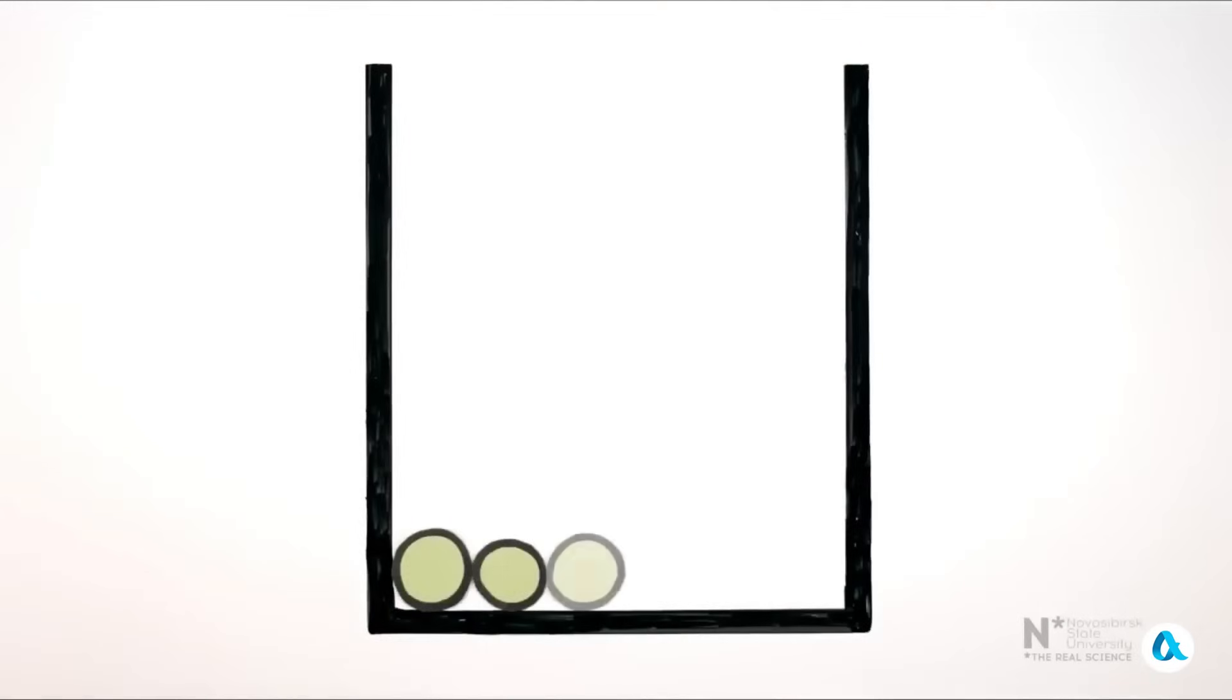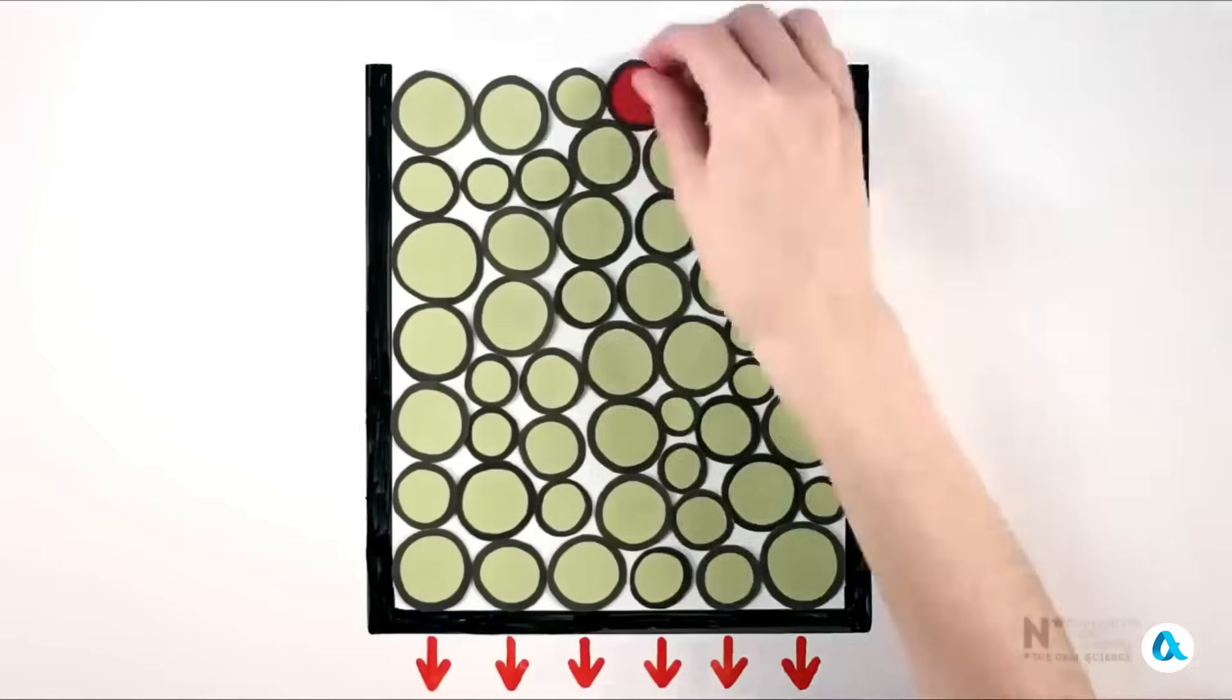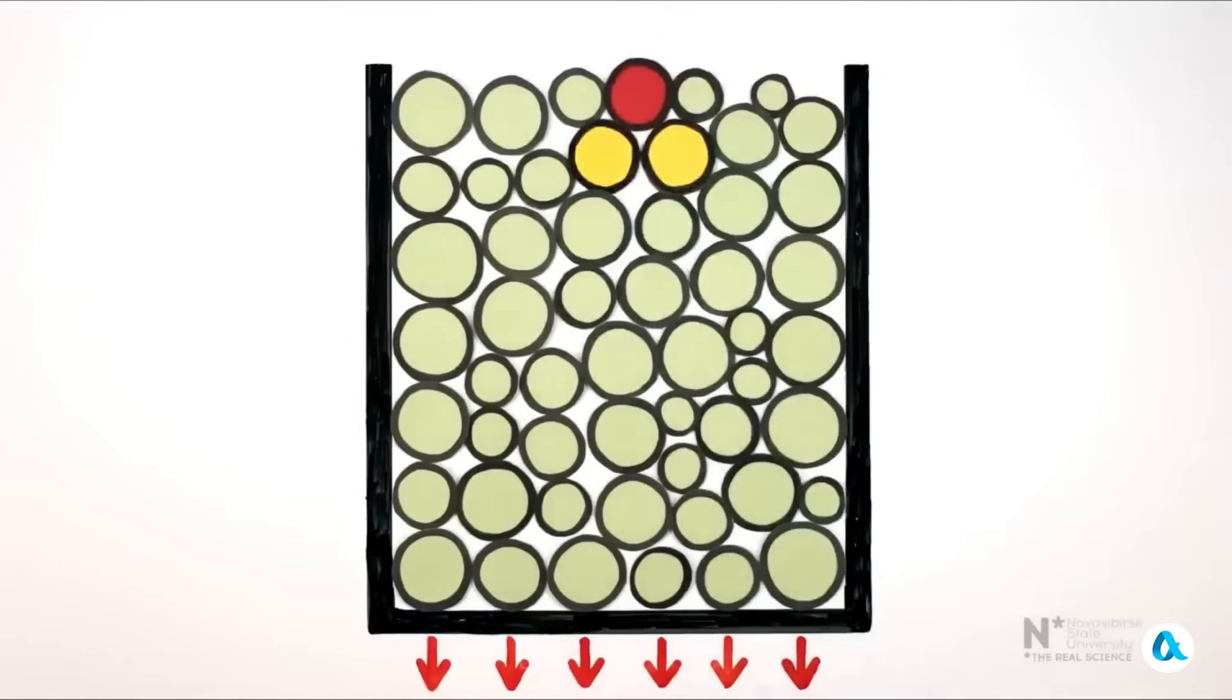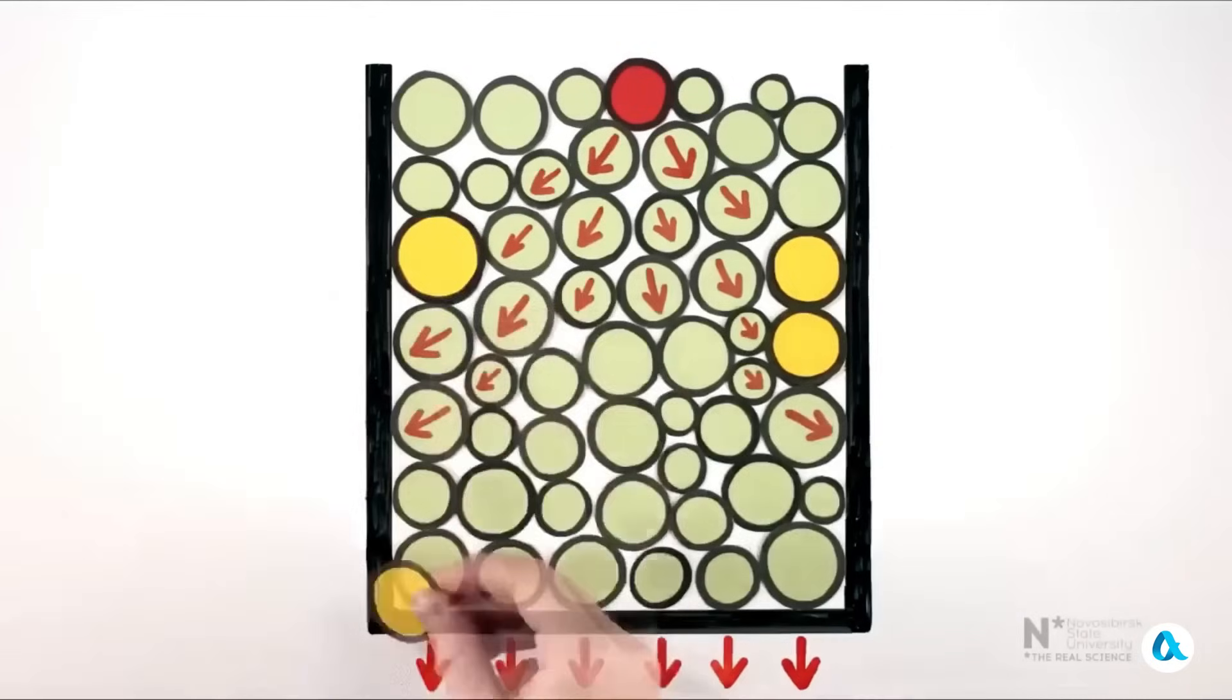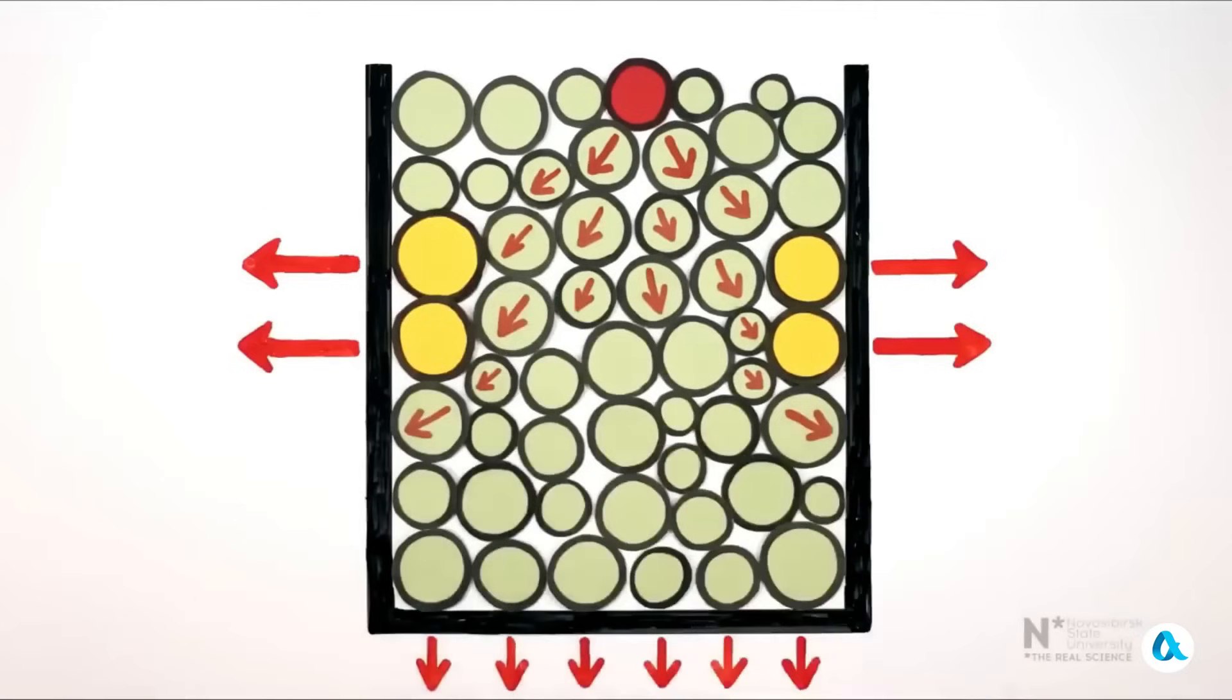When we pour the first portion of sand, its entire weight rests on the bottom of the cylinder. But let's see what happens when the cylinder is filled to a sufficiently high level. Let's isolate a grain of sand. Its weight is distributed among the grains of sand lying beneath it. And the forces that arise are directed not vertically, but at an angle. At the next step, the redistributed forces can tilt even more. And as a result, the grains of sand near the walls get pressed against those walls. And since these grains of sand are pushed down, there is a frictional force acting on them, directed upwards. So the upper layers of sand are supported by this frictional force and create almost no additional pressure on the bottom of the container.